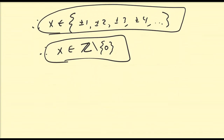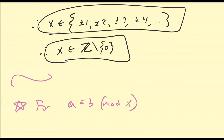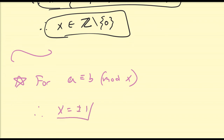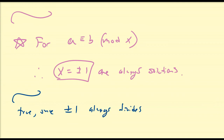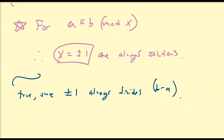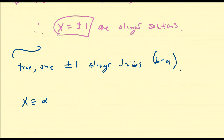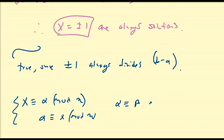One special property: for a congruent to b modulo x, we can say that x equals plus or minus 1 are always solutions. This is true since plus or minus 1 always divides b minus a. To summarize, we discussed three basic congruence equation types: x ≡ α mod n, α ≡ x mod n — which are essentially the same since congruence is symmetric — and α ≡ β mod x. These are some solution strategies for solving basic congruence equations.